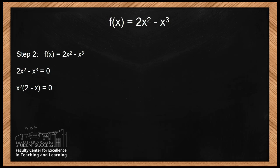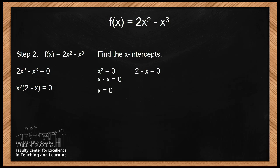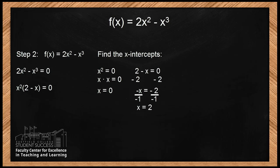Now that we have our function factored, let's set each factor equal to 0: x² = 0 and 2 - x = 0. Solving: x = 0, and subtracting 2 from both sides gives -x = -2, so x = 2. We found two x-intercepts: (0, 0) and (2, 0).